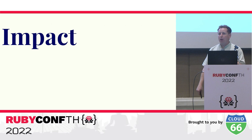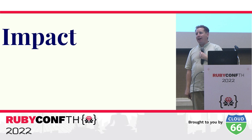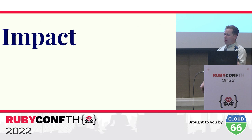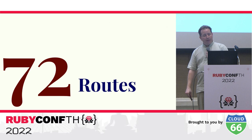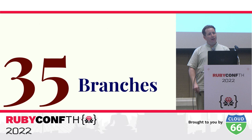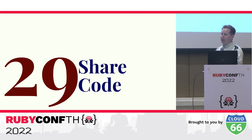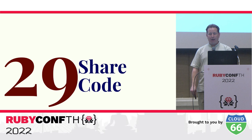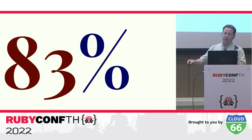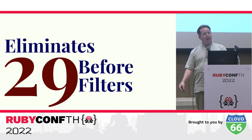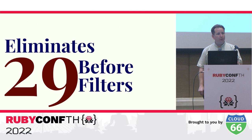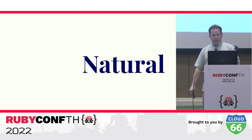For individual routes these improvements may seem small, however in my experience the majority of routes in an application benefit from the ability to share logic using a routing tree. I analyzed a small application that I had originally developed in Sinatra and later converted to Roda. This application has 72 total routes. To get to those 72 routes there are 35 branches in the routing tree, and of the 35 branches, 29 contain code that is shared by all routes under the branch — that means 83% of the time that I'm branching, Roda's integration of routing and request handling eliminates duplicate code. It also shows that Roda's routing tree in this case eliminates 29 separate before filters that would be needed in Sinatra or Rails.